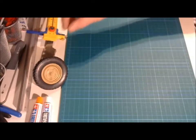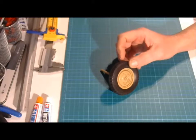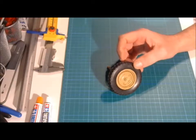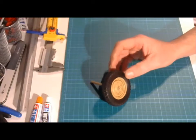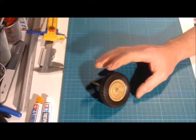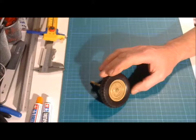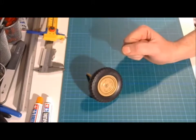First of all, you will need a wheel. I'm going to use a wheel from a Kubelwagen kit. This is the old Esci kit because this wheel is quite big and my camera is quite bad, so otherwise you wouldn't see what I'm doing.